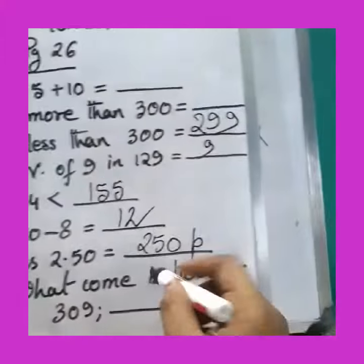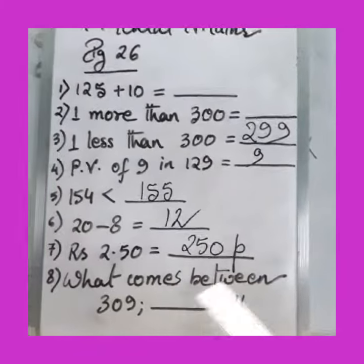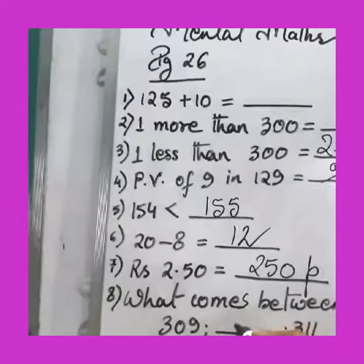What comes between 309 and 311? It is 310.